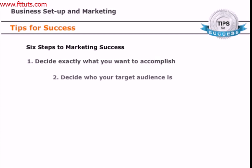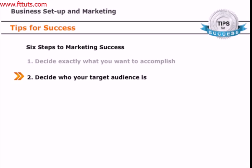The second step is to decide who your target audience is — who are you trying to sell to and what do you know about them? Write down everything you know about their common characteristics, age, income, and interests. This will be a big help as you try to decide what you should emphasize or focus on with your marketing efforts.